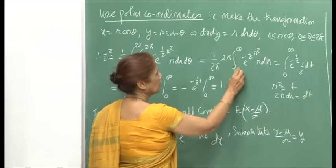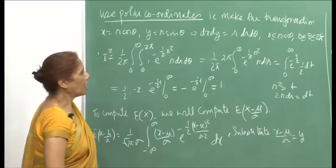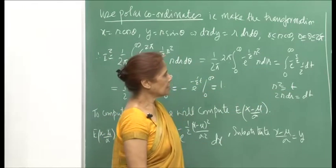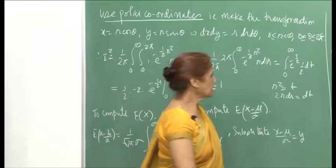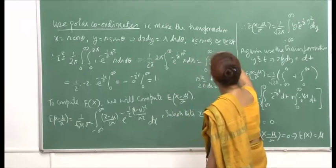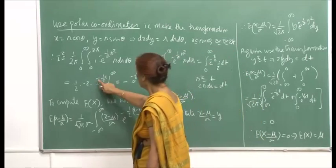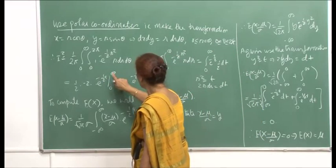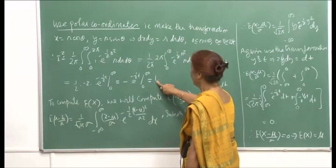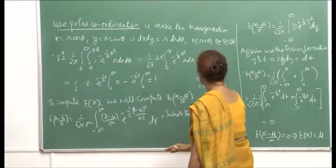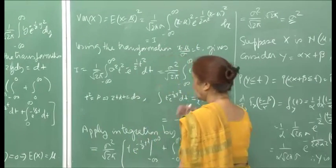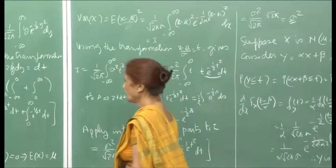And then it is only integration with respect to r. To integrate this, I make the transformation r squared = t, and this helps me to reduce it further. This is minus 2 times e raised to minus half t from 0 to infinity, which reduces to 1. So we have verified that the normal PDF that we have defined is a valid PDF.